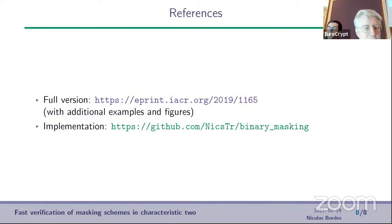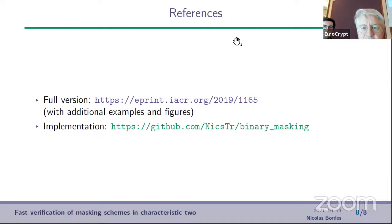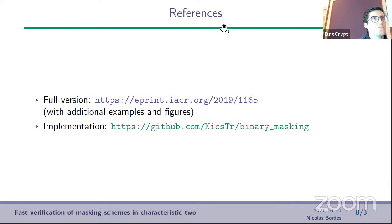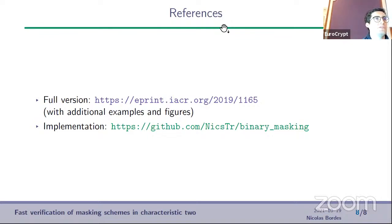A question from Alexey Udovenko: how is verification related to original security proofs of schemes — is the aim to catch mistakes or complement the proof? The answer is that the verification tool is primarily used on masking schemes without formal security proofs, though it can also be applied to schemes with existing proofs.